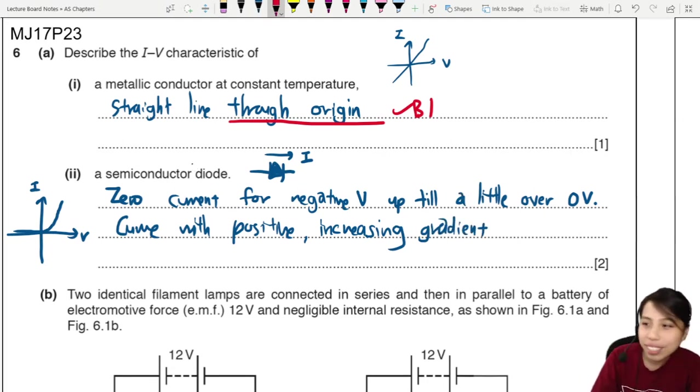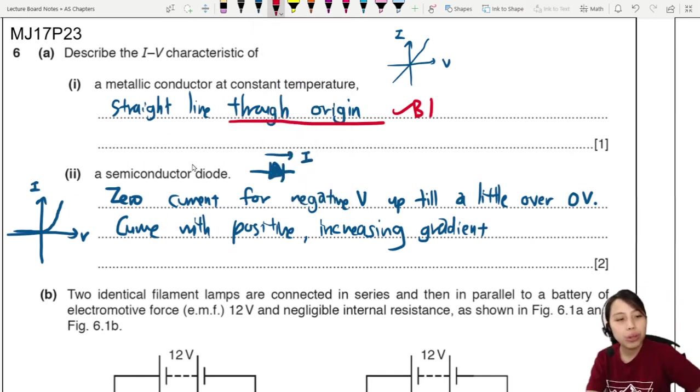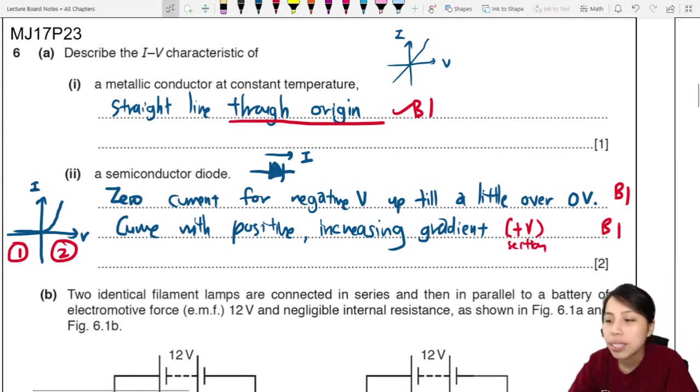So this one has two marks in this question. First one, you talk about the negative part. Second one, you talk about the positive part. So that would be B1 here and B1 here. By the way, the curve with positive increasing gradient is in the positive V section of the graph.